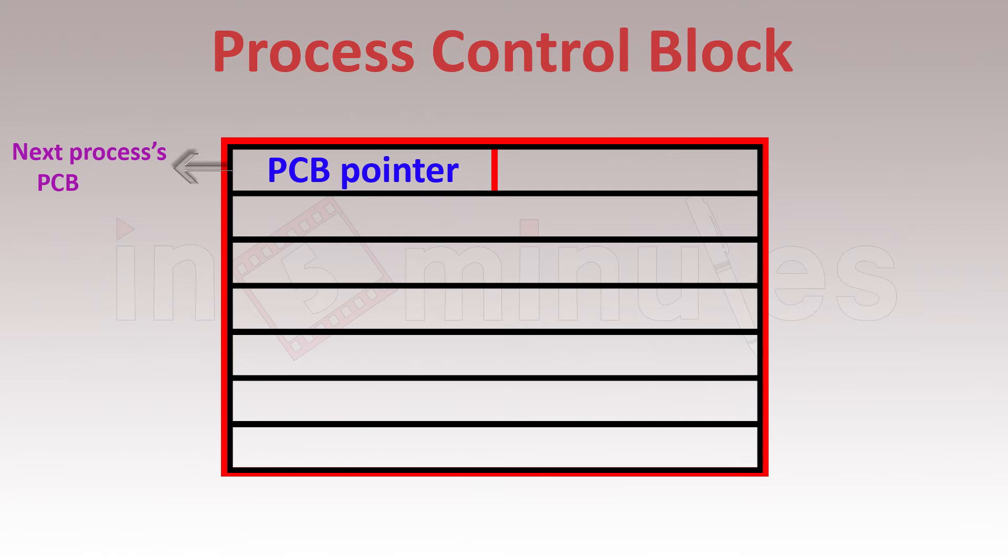The second thing it has is the process state. Process state simply refers to the current state of the process. This can be, as we have already done, ready, running, waiting, and so on.